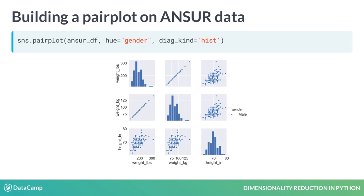Plus, diagonally, a view of the distribution of each feature. The example shown here visualizes a sample of the US Army body measurement dataset called ANSUR, and we've set the kind of plot to show in the diagonal to 'hist' for histogram.